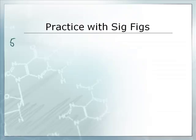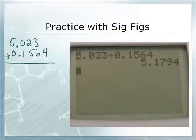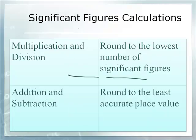So let's say I have 5.023, and I'm going to add to that 0.1564. You're going to do that on the calculator. 5.023 plus 0.1564. What's the calculator answer? The calculator answer says 5.1794. And that, of course, is wrong. The calculator's wrong? The calculator's wrong. I cannot believe it.